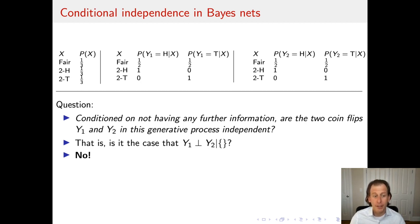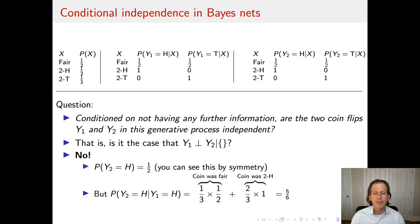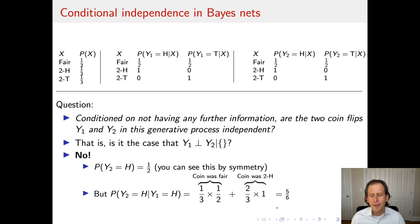The answer is no. Here's a simple way of showing this. By symmetry, the marginal probability of the first coin coming up heads is 1/2. But if you first saw that the first coin flip came up heads, the conditional probability of the second coin flip coming up heads turns out to be much higher — 5/6. You've ruled out the possibility that the coin is two-tailed, and it's now twice as likely that the coin is two-headed than that it's a fair coin. So there is no conditional independence between Y1 and Y2 given no further information.